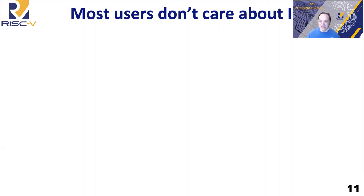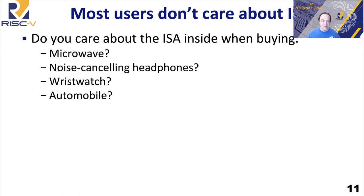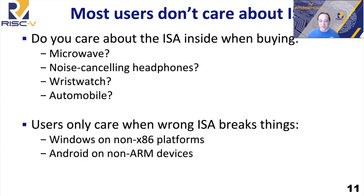Most people don't care about instruction sets. When I'm buying a toothbrush, I don't usually worry about which instruction set is in there. When you're buying a product, the ISA is not high on your priority list. Where you do care about the ISA is when things break — for example, when people tried to run Windows on non-x86 platforms, a lot of things didn't work as expected, or when trying to run Android on a non-ARM device. People really only care about the ISA when things break.